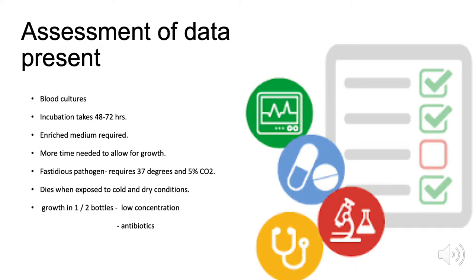There may have been no growth in the second bottle because Neisseria meningitidis is a fastidious organism and the temperature requirements of 37 degrees and 5% carbon dioxide conditions may not have been provided. Another possible cause could be that concentrations of Neisseria meningitidis are low in the patient's body, or the patient is taking some type of antibiotic to prevent organism growth.